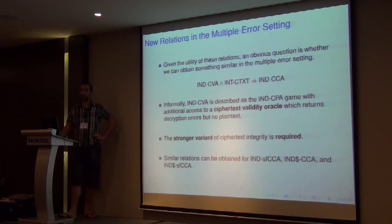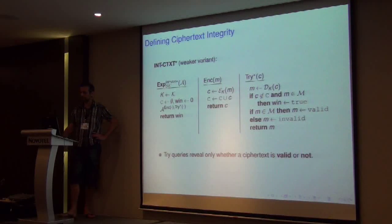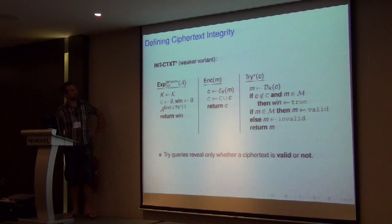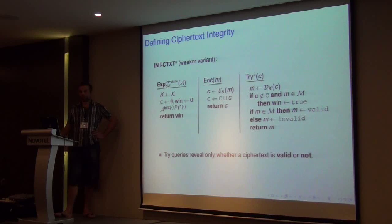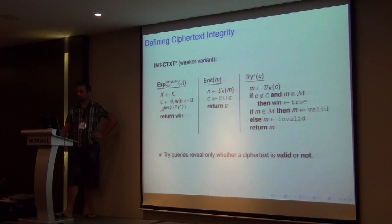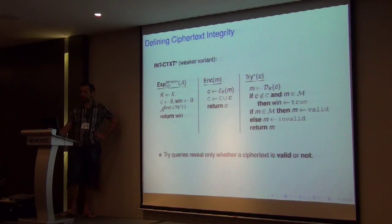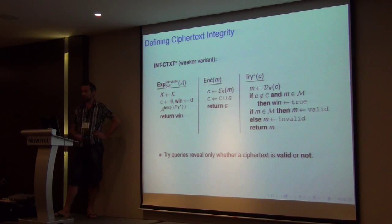Note that the trial oracle in the weaker variant only reveals whether the ciphertext is valid or not. The stronger variant is defined very similarly, except that now the trial oracle also reveals, when the ciphertext is invalid, the exact error symbol. So the question is: CTEX clearly implies the weaker notion CTEX*, but it's not immediately clear whether the converse holds. Secondly, you might question whether the relation NCVA and CTEX implies NCCA still holds if we assume only the weaker variant.